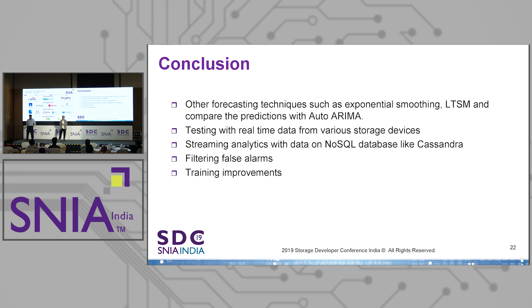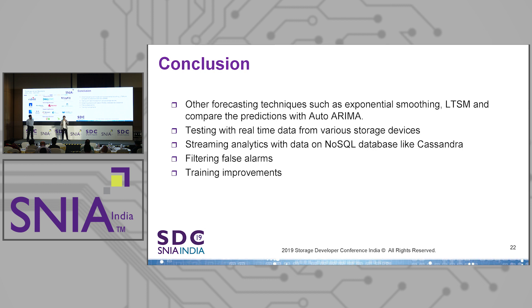To conclude, there's a lot more work to be done. We need to enhance our algorithms using LSTM — Long Short-Term Memory — which is more of a neural network algorithm, to improve our forecasting techniques. We want to filter out false alarms and make training improvements. We also want to move toward real-time streaming with data stored in systems like Cassandra and see how our models perform. Those are the next steps for us.